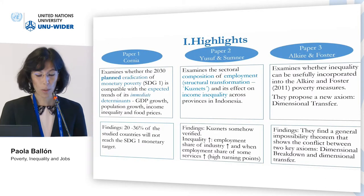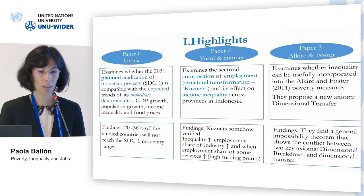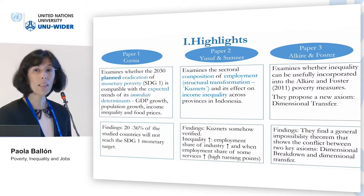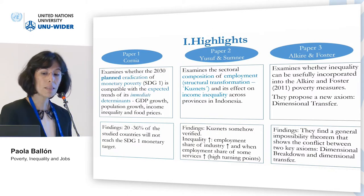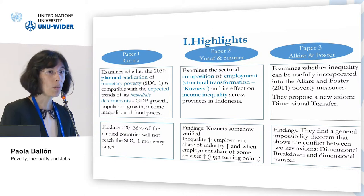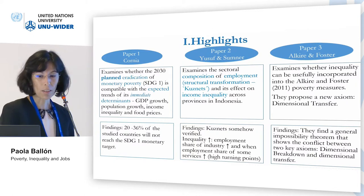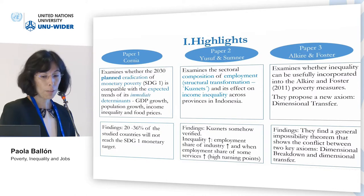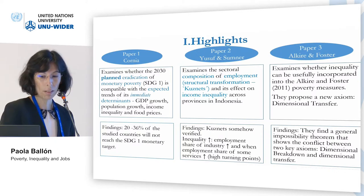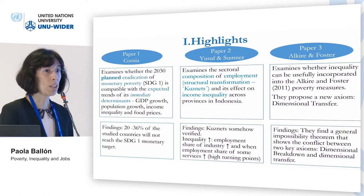The first paper from Professor Kornia examines whether the 2030 planned eradication of monetary poverty is compatible with expected trends of its immediate determinants. The determinants in his equation are essentially GDP growth, population growth, income inequality, and also food prices. He finds that 20 to 36% of the countries studied will not reach SDG 1, basically in terms of monetary targets.